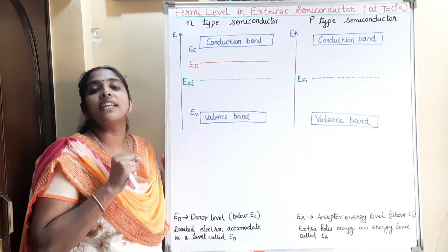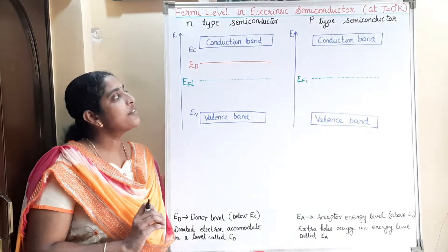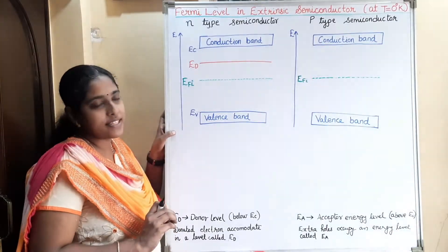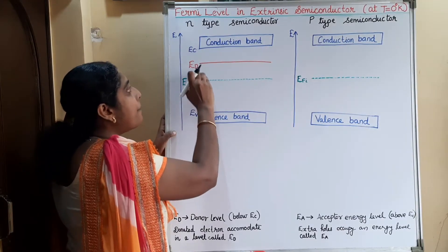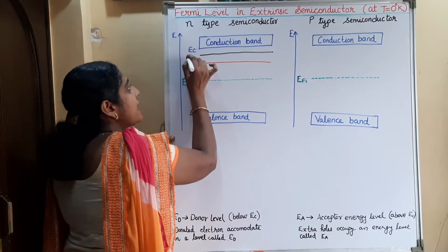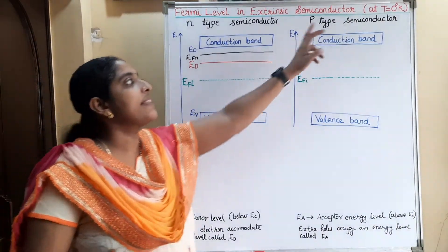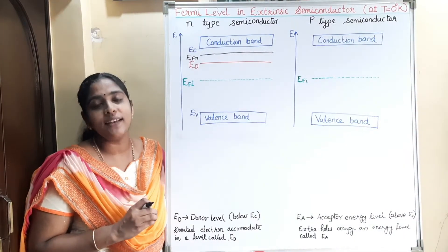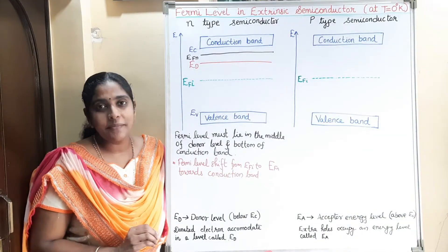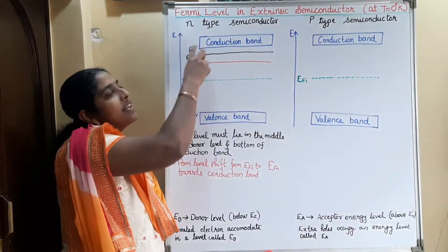Now the question is: where is the position of the Fermi level in an n-type semiconductor? The Fermi energy level will shift towards the conduction band because more number of electrons are in the upper region compared to the number of holes in the valence band. So EFN will shift upwards towards the conduction band. The position of the Fermi level will be in between the conduction band and the donor energy level. At T equal to 0 Kelvin, the Fermi level in n-type semiconductor will be at the middle of the conduction band and the donor energy level. That is, the Fermi level shifts from EFI to EFN towards the conduction band.